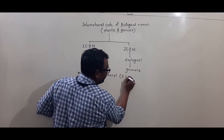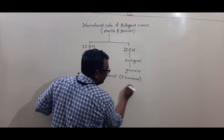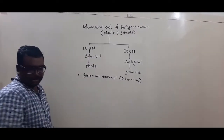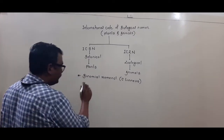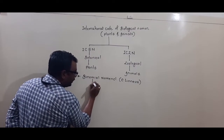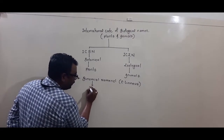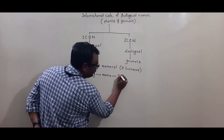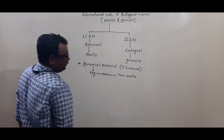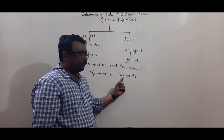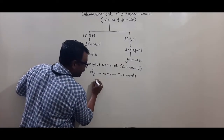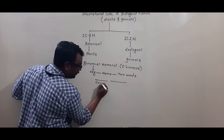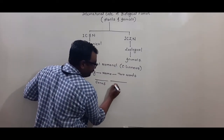Binomial nomenclature was proposed by the scientist Carolus Linnaeus, who is known as the father of taxonomy. In binomial nomenclature, each organism is given a name that consists of two words. The first word represents the genus of the organism, and the second word represents the species.